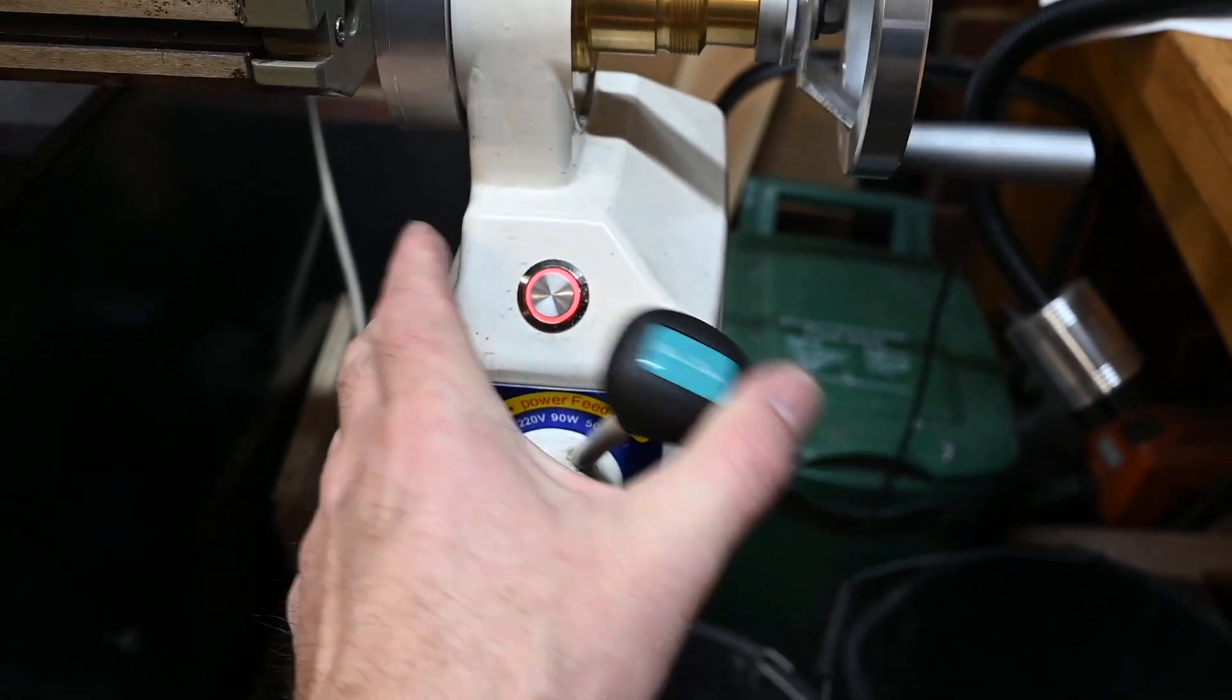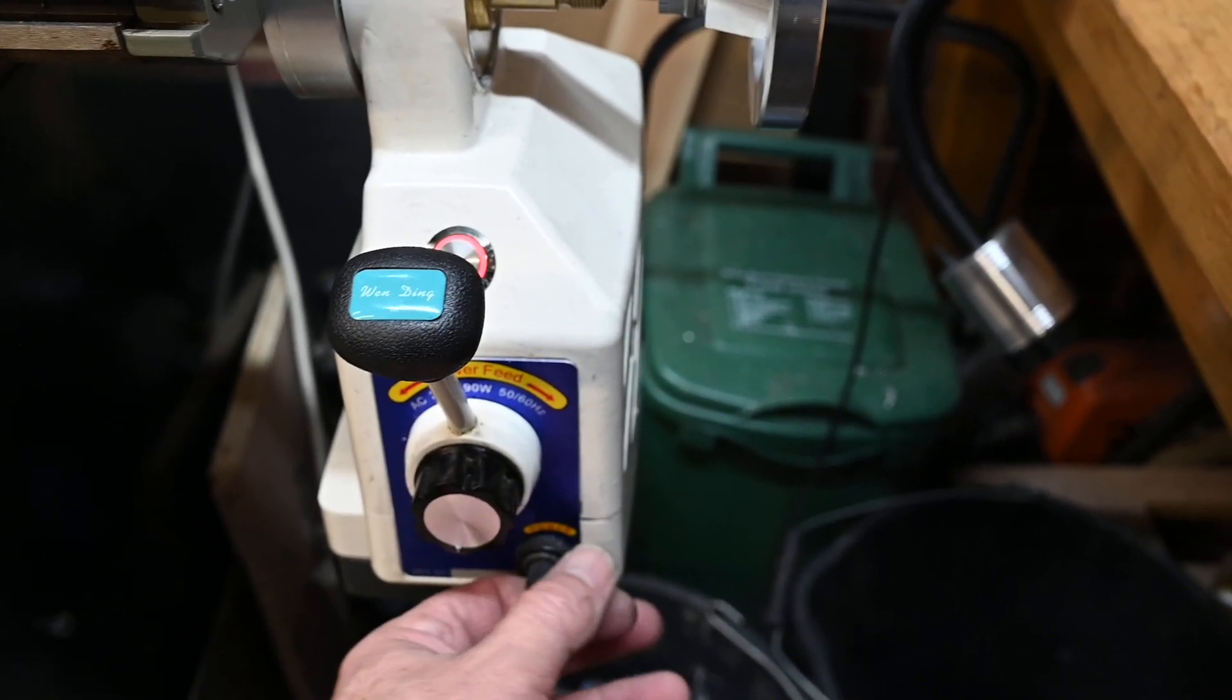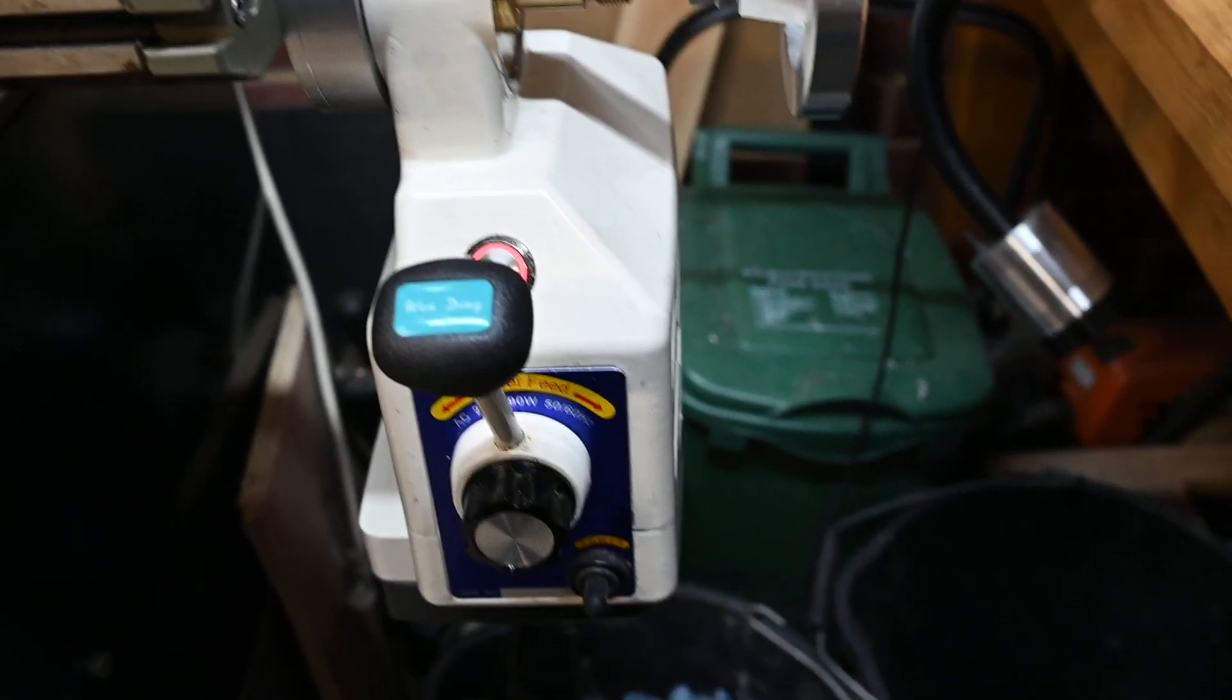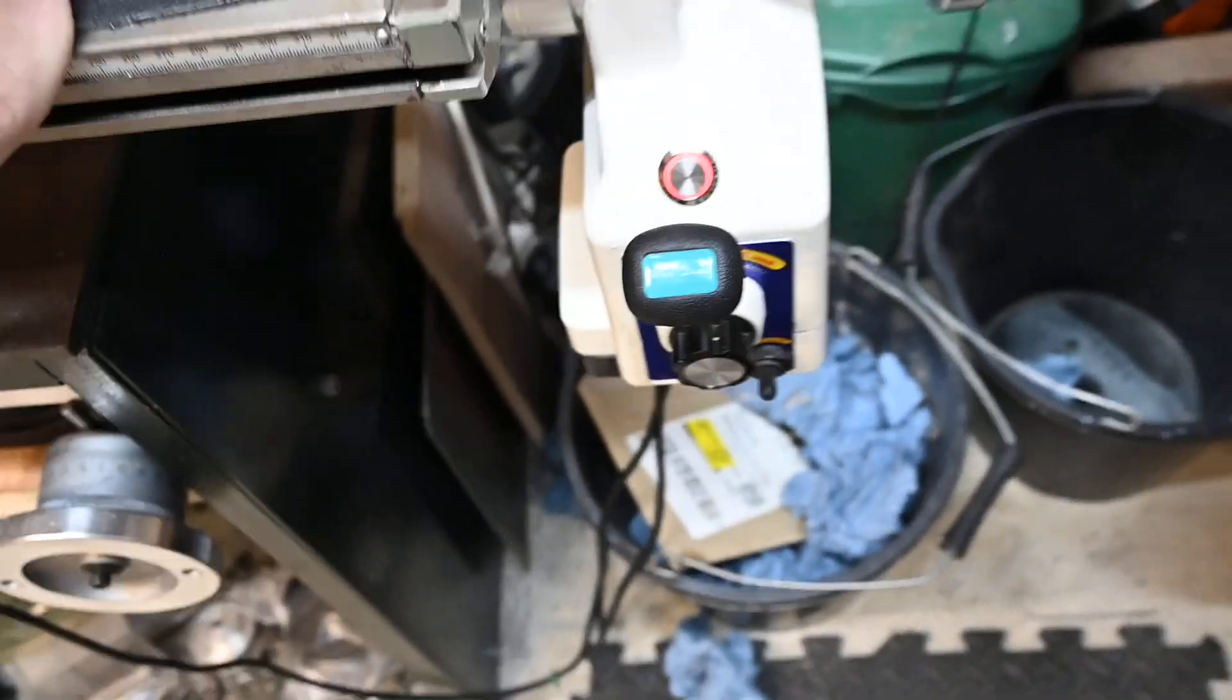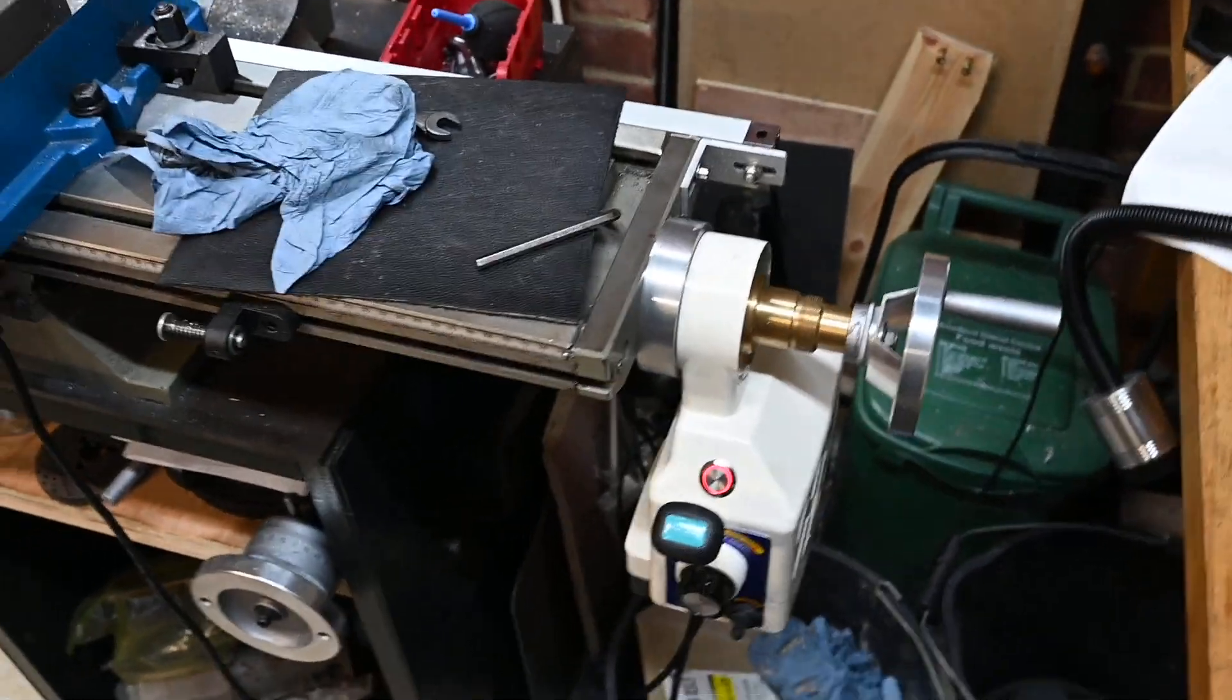Now I don't know what the speeds are, there's no indication of what the speeds are. This button is just your on and off button, so you just have to set the speeds at what works for you when you're cutting. So that's how I modified my mill.